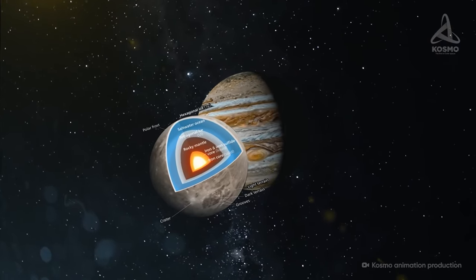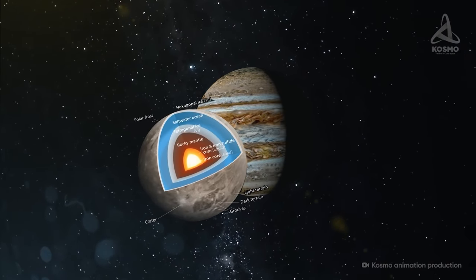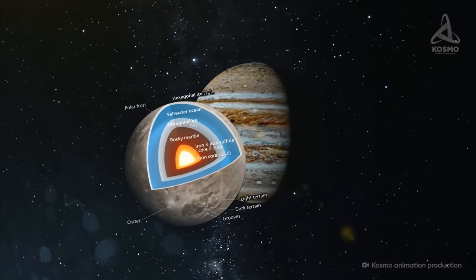This is twice the mass of our Moon. Interestingly, Ganymede is the only satellite in our solar system with a liquid metal core and its own magnetosphere.